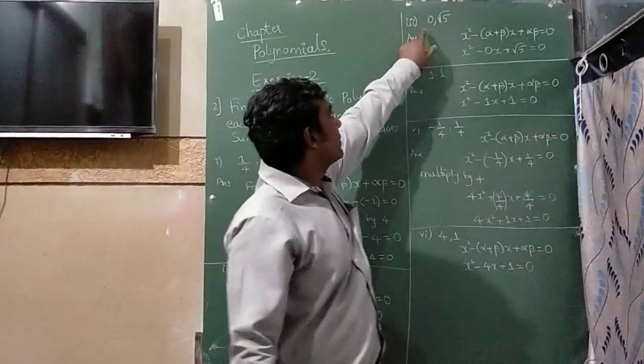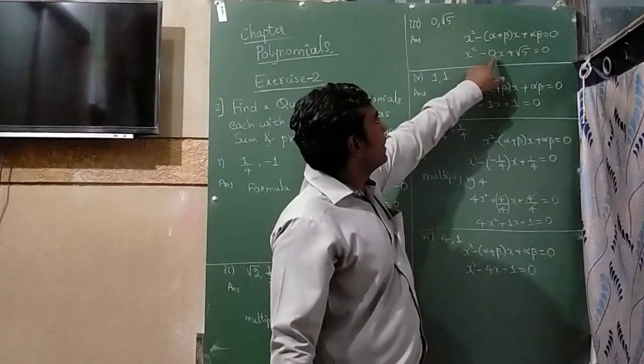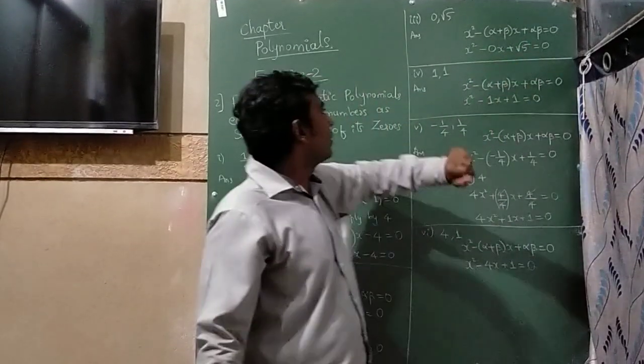In the third question, you have sum as 0 and product as √5. So x² - 0·x + √5 = 0.